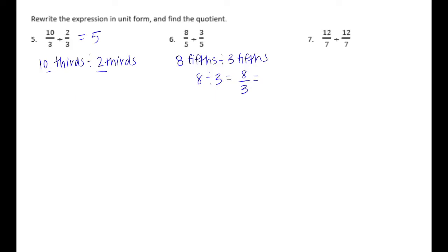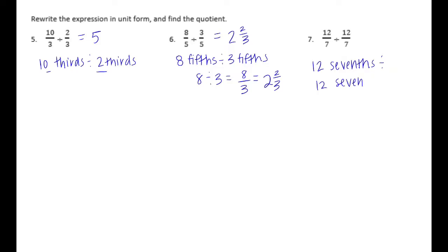Making 8 thirds into a mixed number: 3 goes into 8 twice, that's 6, so we have 8 minus 6 which is 2 left over out of 3. So this equals 2 and 2 thirds. Then we have 12 sevenths divided by 12 sevenths, so 12 divided by 12 is equal to 1.